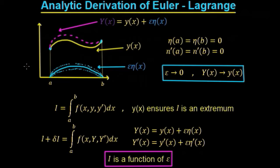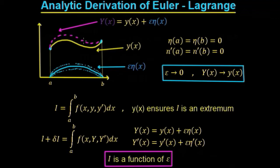Lagrange came along and added the variation over the entire length of the extremum. He introduced this function eta(x), shown in blue, then multiplied eta(x) by some constant epsilon — a real number. So varying epsilon just scales this function eta(x), producing the family of functions shown in the dotted curves. He then took this variation and added it onto the original extremum, getting this pink curve here called Y(x) — the original extremum with a variation added. As epsilon tends towards 0, the variation tends towards 0, and Y(x) tends towards small y(x).